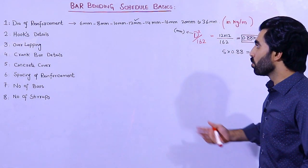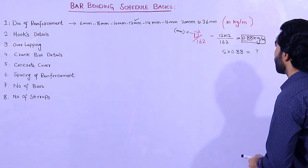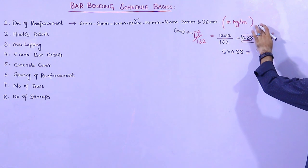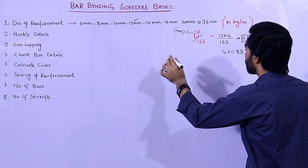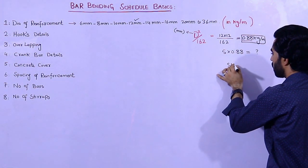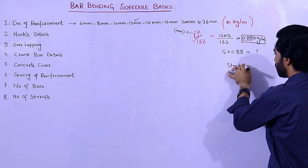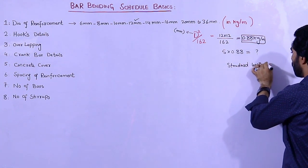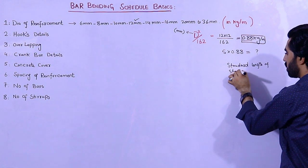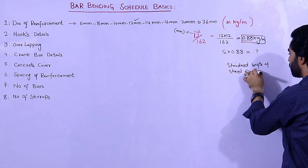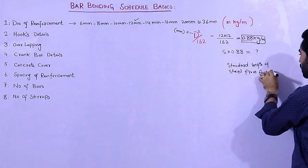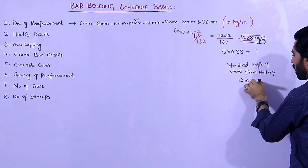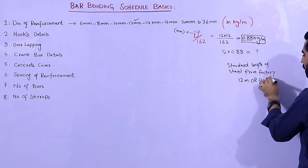As you know, from the factory we have the standard length of steel rod, which is 12 meters or 40 feet.